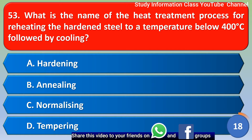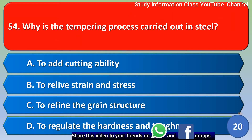Next question: What is the name of the heat treatment process for reheating hardened steel to a temperature below 400 degrees Celsius followed by cooling? Option A: hardening. Option B: annealing. Option C: normalizing. Option D: tempering. The correct answer is Option D: tempering.